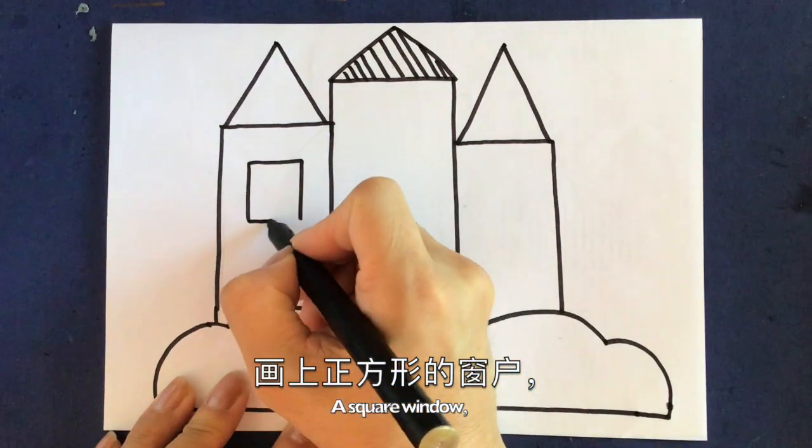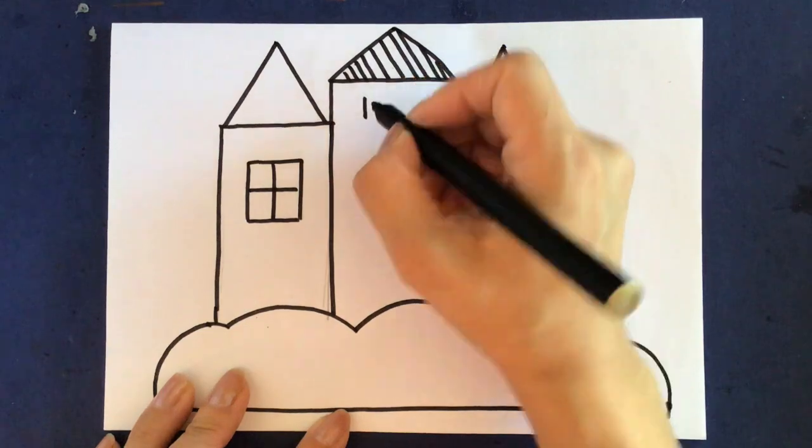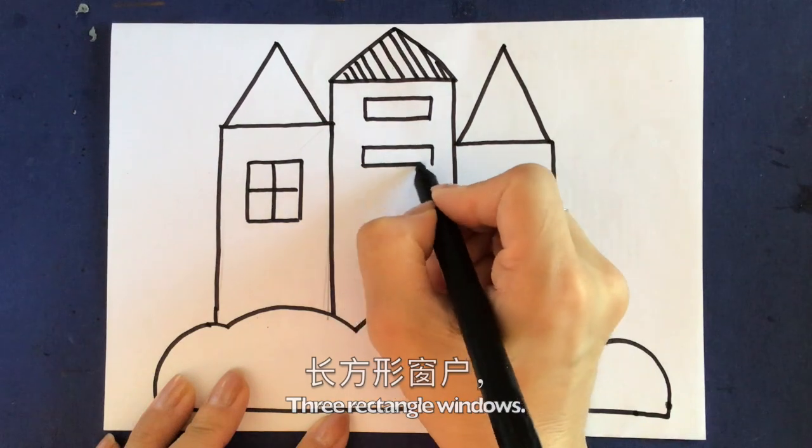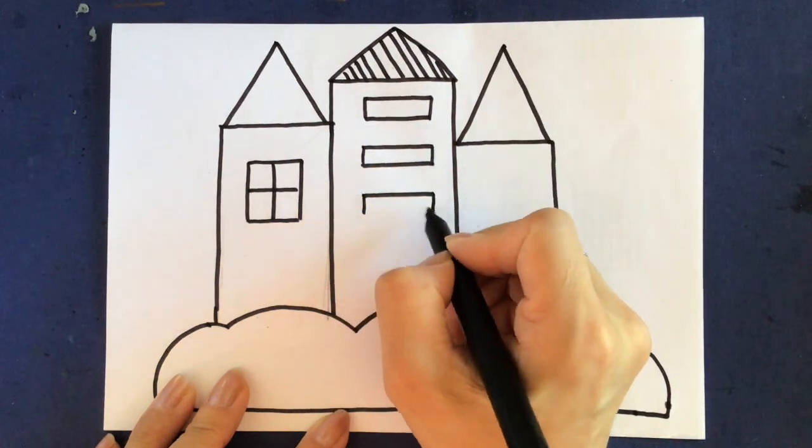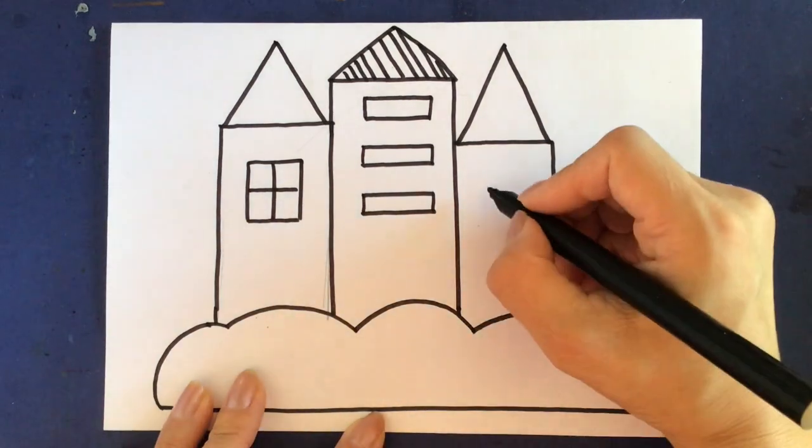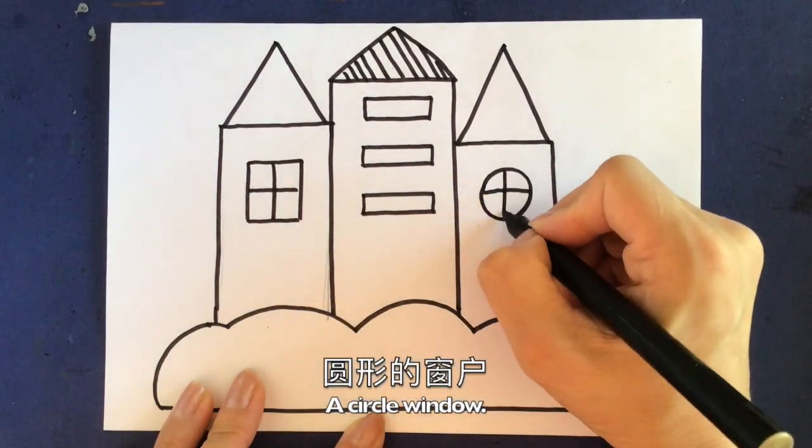画上正方形的窗户。A square window here. 长方形的三个窗户。Three rectangle windows. 圆形的窗户。A circle window.